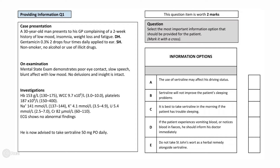Now that you have considered your answer, let's go through the question. The question is asking you to establish what is the most important information to explain to a patient with depression who still has good insight. The question informs you that he will be offered sertraline for 6 weeks. Sertraline is one of the selective serotonin reuptake inhibitors, otherwise called SSRIs, which is one of the major classes of antidepressant drugs. The clinical presentation is typical of a patient with depression and there are no other influences such as alcohol or drugs involved. The question therefore focuses on giving important information about the drug sertraline.